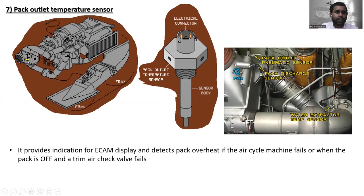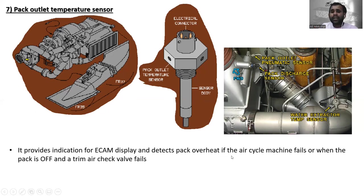The next one is the pack outlet temperature sensor, located near the condenser. You can see the electrical connector, the pack outlet temperature sensor body, the pack outlet pneumatic sensor, the discharge sensor, and the water extractor temperature sensor nearby. The pack outlet temperature sensor provides indications for ECAM display and detects pack overheat if the air cycle machine fails, or when the pack is off and the trim air check valve fails.